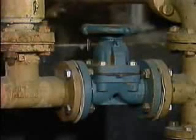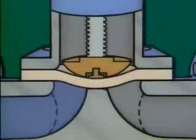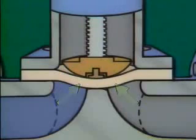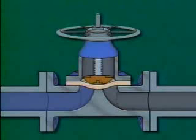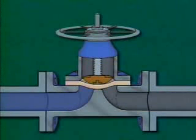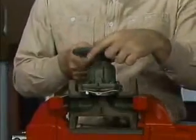A diaphragm valve has a bell-shaped bonnet and a body that looks like two pipes that curve into the bonnet. A distinguishing feature is a flexible diaphragm used instead of a disc to seal against the valve's seating surface. A diaphragm valve also has no packing, because the diaphragm forms a boundary that keeps fluid from leaking along the stem. It has a part called a plunger connected to the valve stem, and a diaphragm stud connects the diaphragm to the plunger. When the handwheel is turned in the closed direction, the stem and plunger are lowered, forcing the flexible diaphragm down against the seating surface to stop flow. When turned in the open direction, the diaphragm moves upward, allowing fluid to flow through the valve.